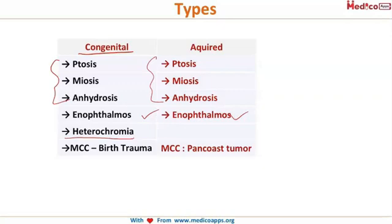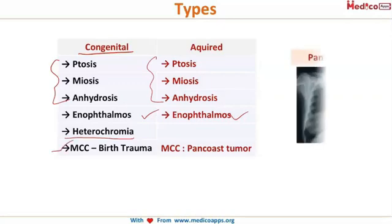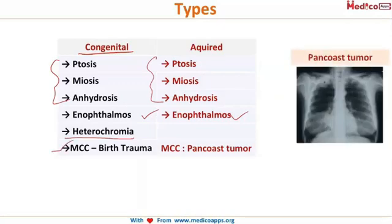The cause of congenital Horner's syndrome is birth trauma. In the acquired type, the important cause is a Pancoast tumor — a tumor at the apex of the lung, visible on X-ray.